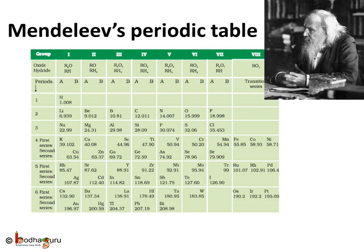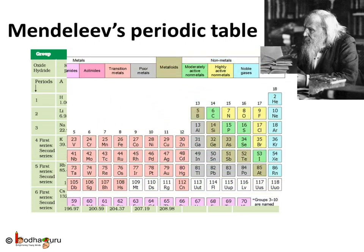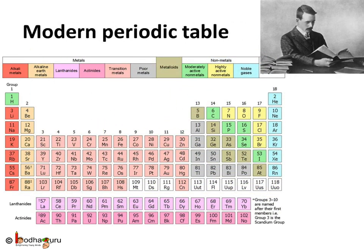Mendeleev's periodic table is based on atomic mass. So in his periodic table, elements are arranged in order of their increasing atomic masses. Whereas the modern periodic table is based on atomic number, and the elements are arranged in order of their increasing atomic numbers.